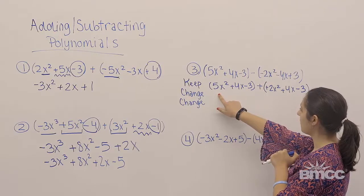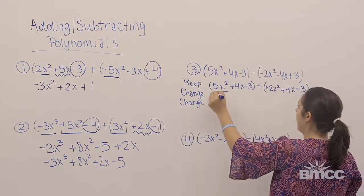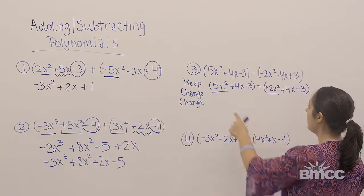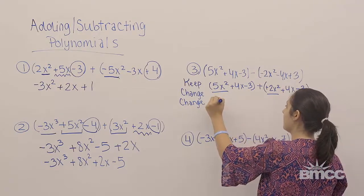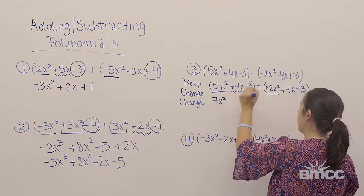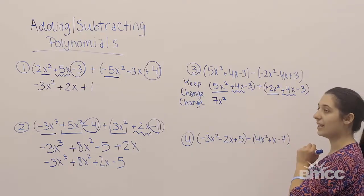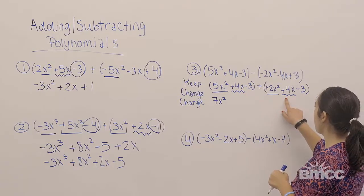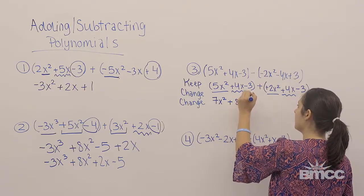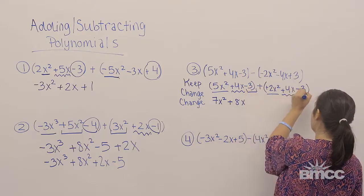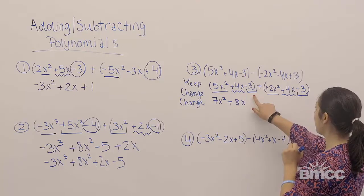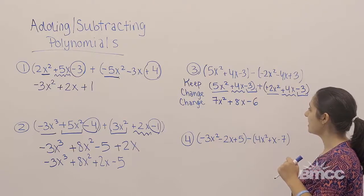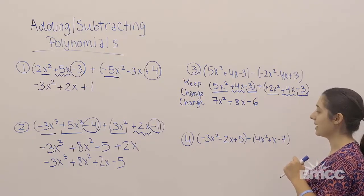Looking for like terms with 5x squared: 5x squared and 2x squared are like terms, so 5x squared plus 2x squared is 7x squared. Positive 4x and positive 4x are like terms, so positive 4x plus positive 4x is positive 8x. And for the constants, negative 3 plus negative 3 is negative 6. So my final solution is 7x squared plus 8x minus 6.